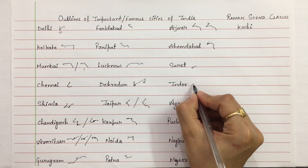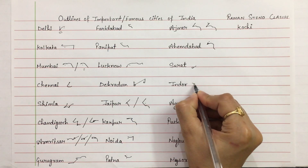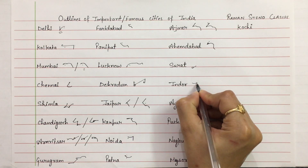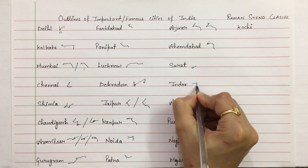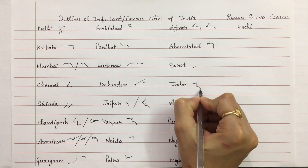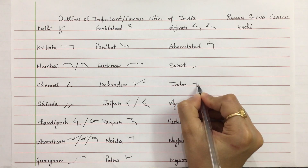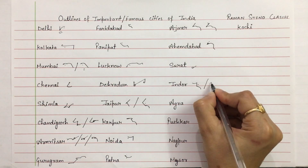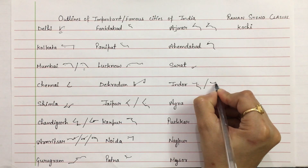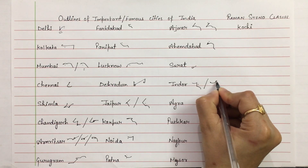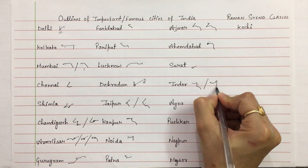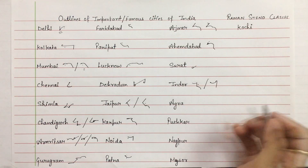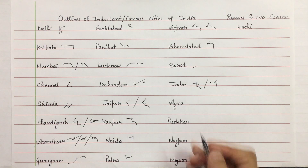Indore — In, D, and R. Indore. Or you can use hook R with D. Indore — you can also write it this way.